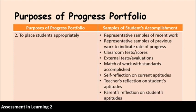The second purpose is to place students appropriately. Samples of students' accomplishments could be representative samples of recent work and previous work to indicate the rate of progress — they can determine whether you are progressing or not. Classroom test and scores, external test or evaluation if you have taken examinations outside of the classroom or school, and match of work with standards accomplished. Self-reflection on current aptitudes, teacher's reflection on the student's aptitude, and parents' reflection on the student's aptitude. We have to remember that parents' participation in education is really highlighted and recommended because teachers and parents should go hand-in-hand in educating the learners — that's why we have the PTA, Parent-Teacher Association.